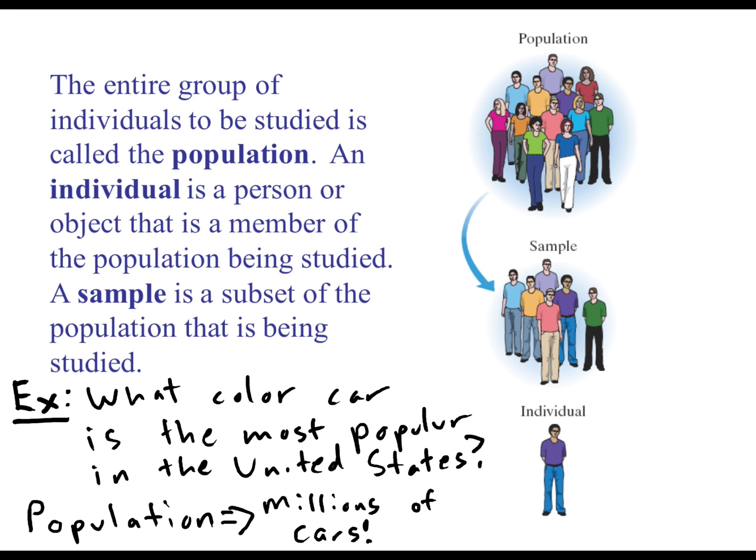Well what we would do is collect a smaller number of cars which we call the sample. And from that sample of cars we would try to talk about what that tells us about which color of cars is the most popular out of all these millions of cars. We use the sample to try to describe what's going on with the population. That is the entire point of statistics.